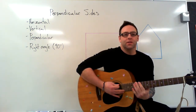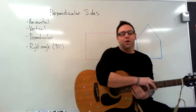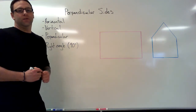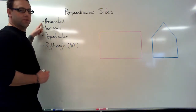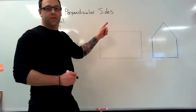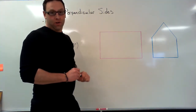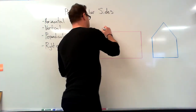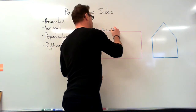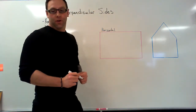Hey, what's up guys, Mr. Lipke here. Today we are going to talk about perpendicular lines. These two terms are horizontal and vertical. Looking at our shape over here, the top and the bottom lines are horizontal lines, and the two sides are vertical.